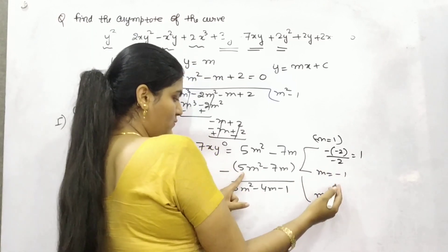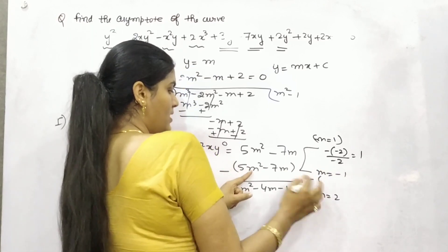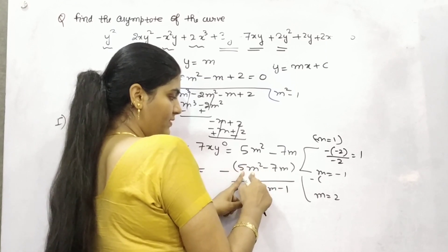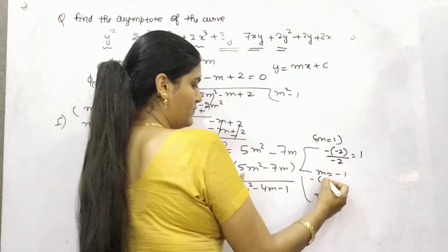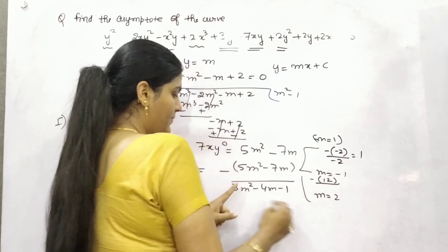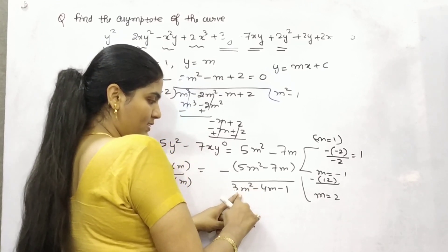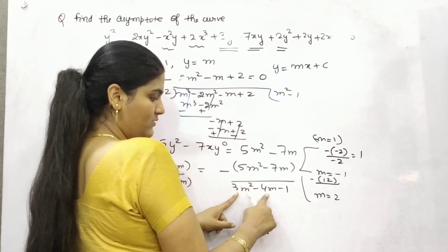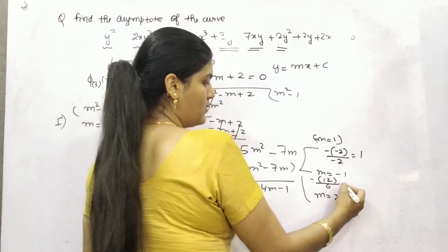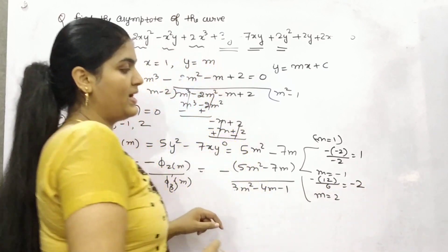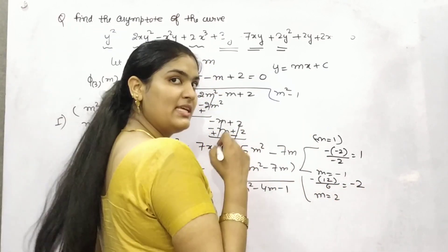If your m is minus 1, so minus 1 square is 1, 5, minus 1 is plus 7 and 5, 12, by minus 1 square is 1, 3, minus 1 is plus 4, 7, minus 1, 6. So you have got minus 2 here.